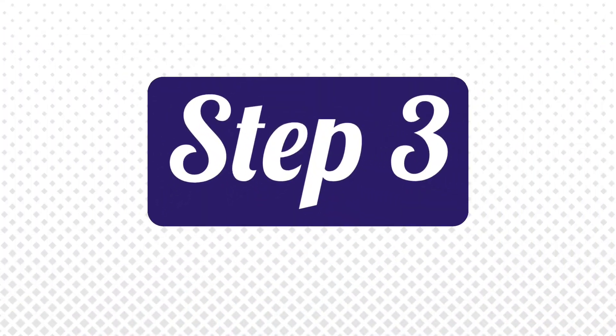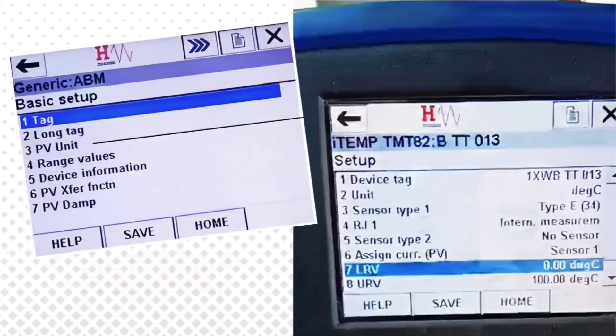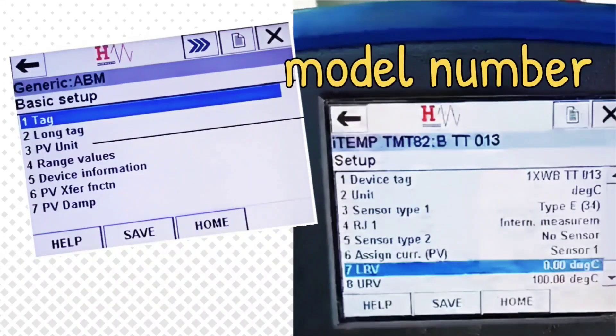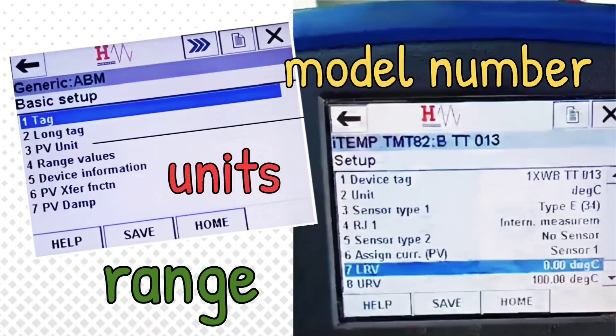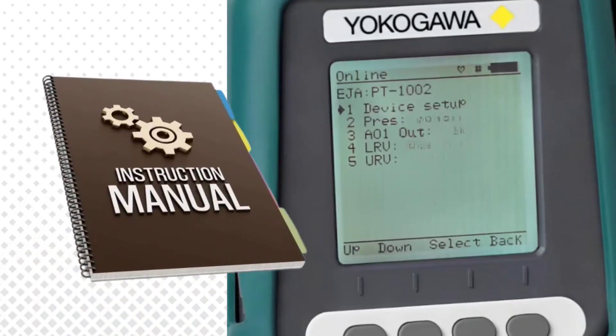Now let's see the next step. In this step, you will enter device information such as model number, range, and units. To fill in this information, you will need the instrument's manual or specification sheet.